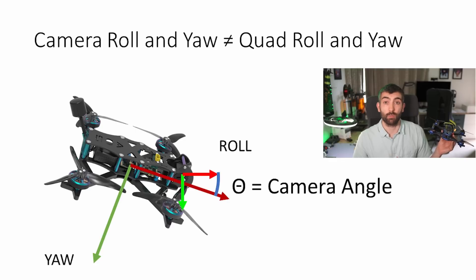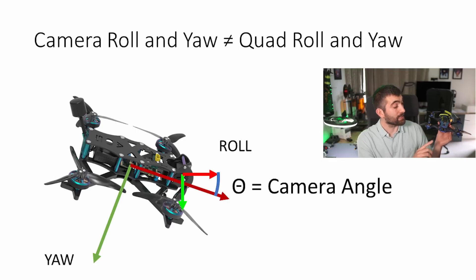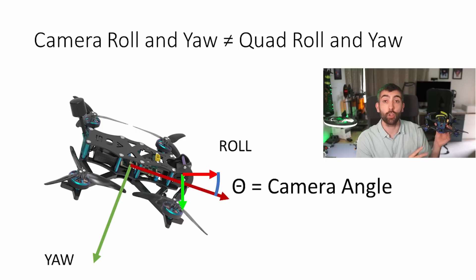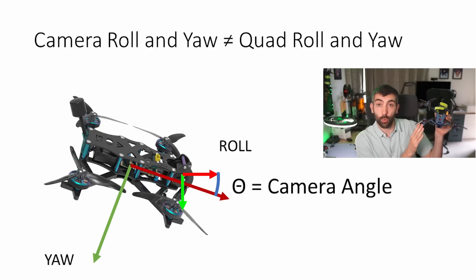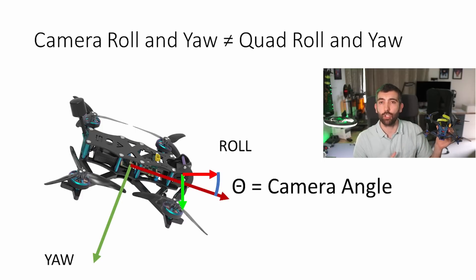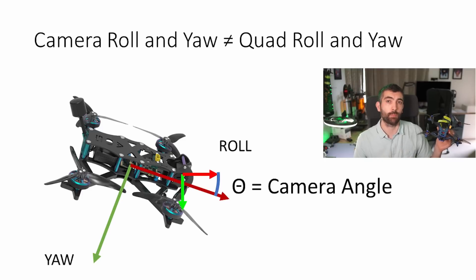But most of us run a significant amount of up tilt — between 15 and 60 degrees — and that means the yaw and roll axes of the camera are no longer aligned with those of the quad. So if we want to do a pure yaw turn from the perspective of the camera, we have to coordinate yaw and roll inputs for the quad to make that happen.